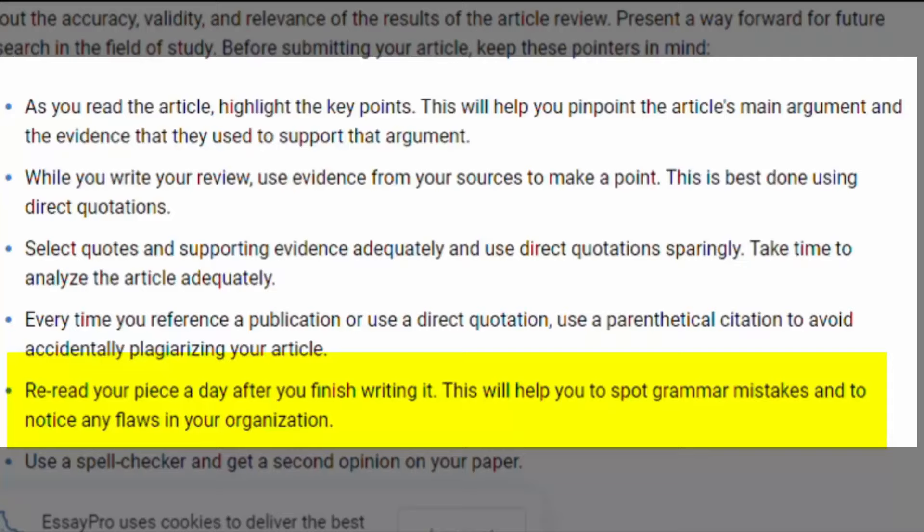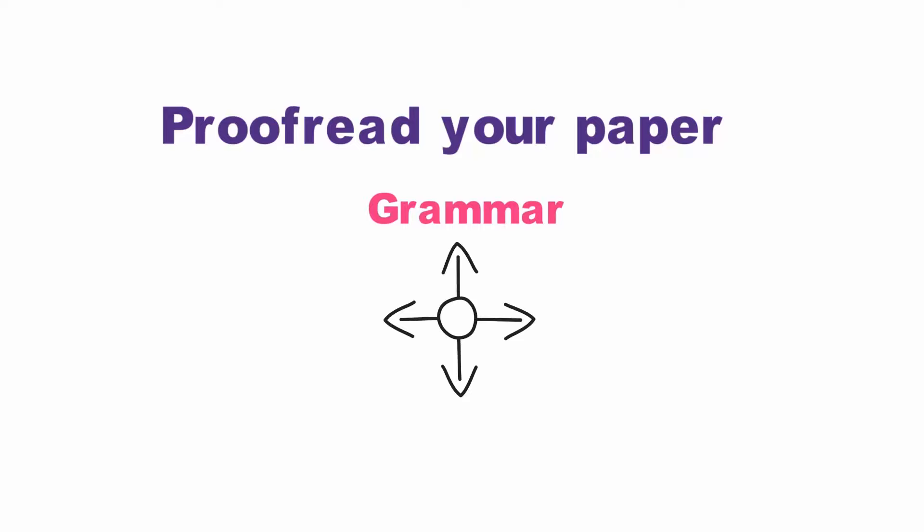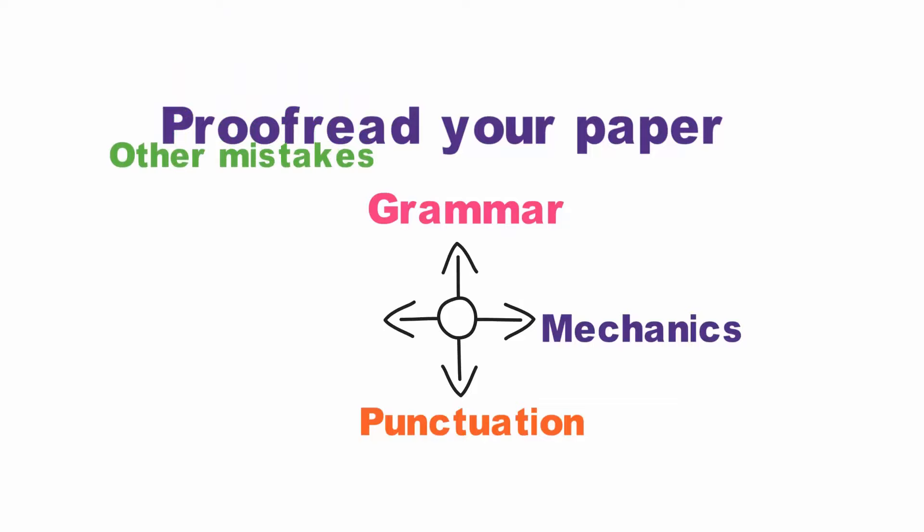Finally, to proofread your paper properly, start by reading it fully and checking the following points: grammar, punctuation, mechanics, and other mistakes. Next, identify whether or not there is any unnecessary data in the paper and remove it. Thank you for watching. I hope you can easily understand how to write a review article. Like, share, and subscribe to my channel for more informative videos about research.